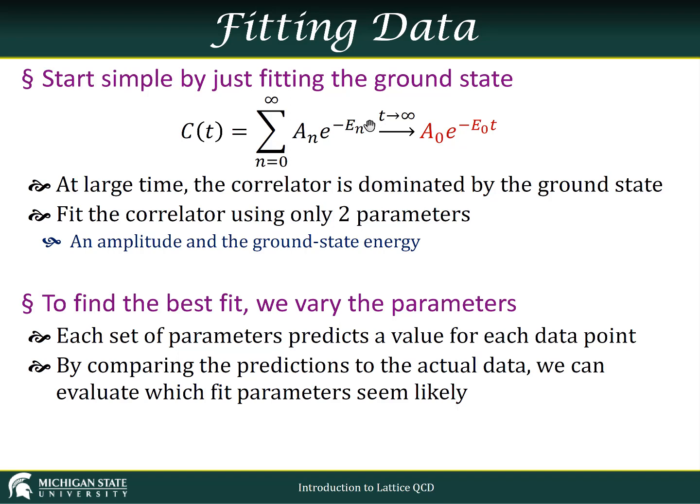We'll assume that our time is large enough that we can approximate this by a sub nought e to the minus e sub nought of t. That means we can fit the correlator using just two parameters. Our two parameters are the amplitude, that's some combination of the overlap factors between our creation and annihilation operators and the nucleon ground state, and the energy of the ground state itself, e sub nought.